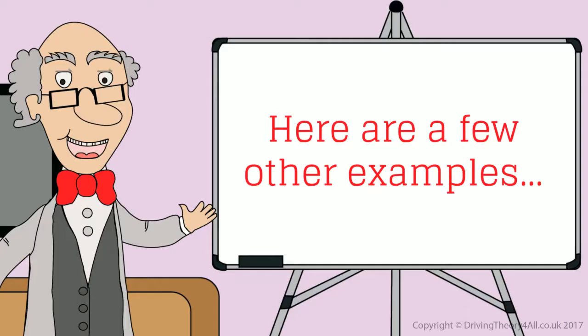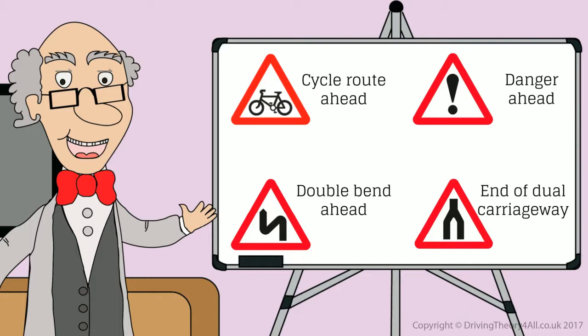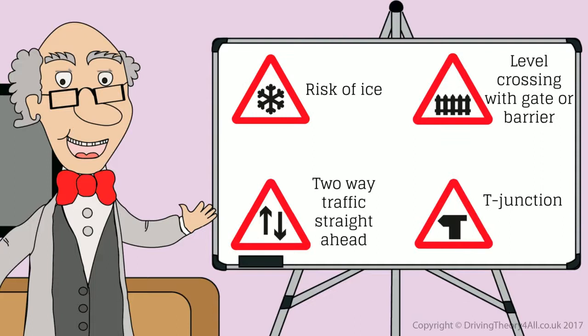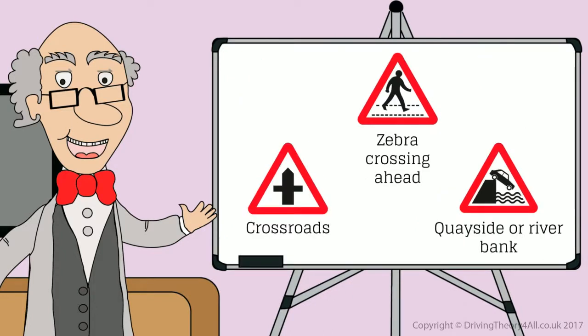Here are a few other examples: cycle route ahead, danger ahead, double bend ahead, end of dual carriageway, risk of ice, level crossing with gate or barrier, two-way traffic straight ahead, T-junction, crossroads, zebra crossing ahead, quayside or riverbank.